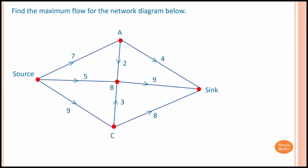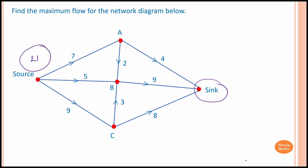Let's have a look at this network. We have 7 units, 5 units, and 9 units flowing out of the source — so altogether 21 units flow out of the source. The idea is to find out the maximum value that flows into the sink, because there might not be 21 units flowing all the way to the sink due to blockages in the network. To do this, we need to find the maximum flowing capacity of each part first.